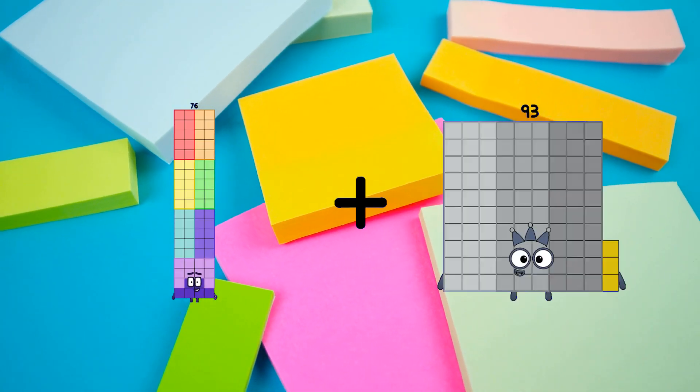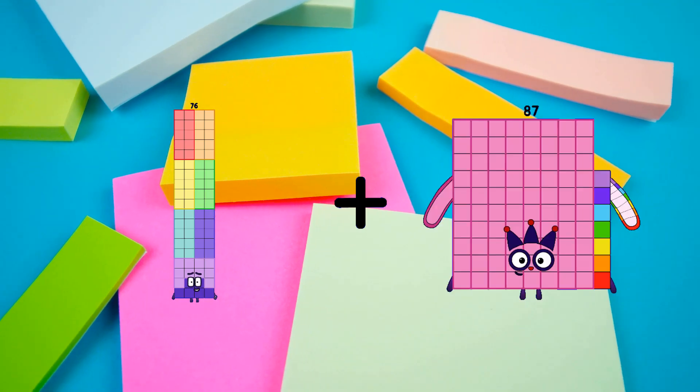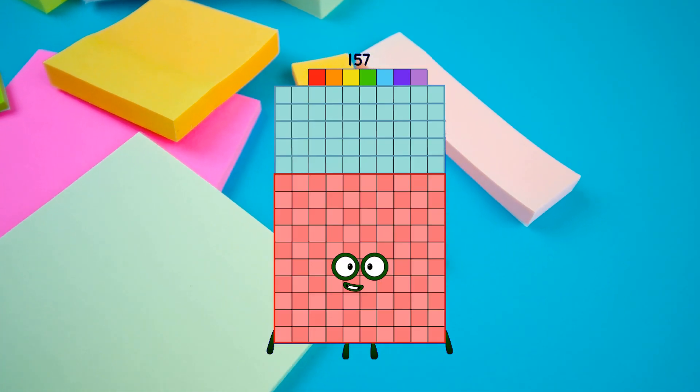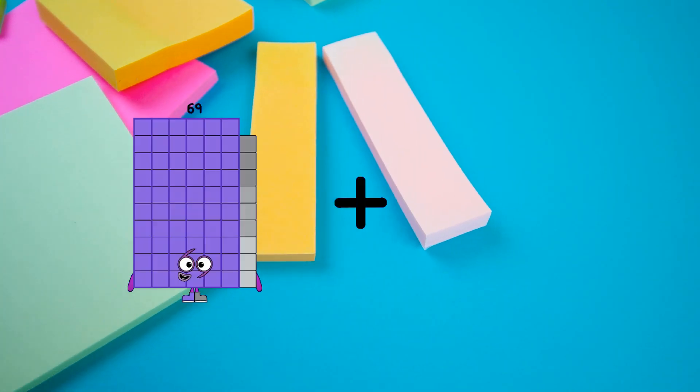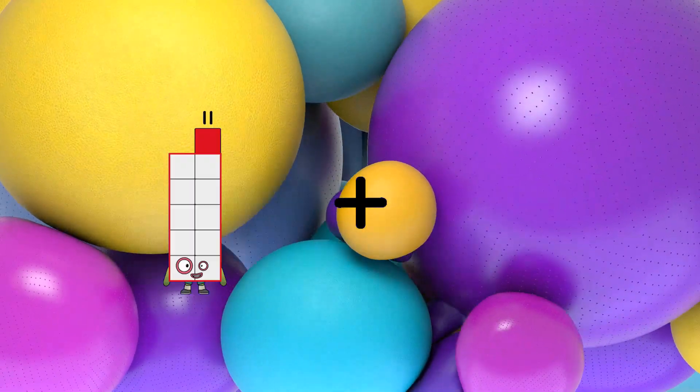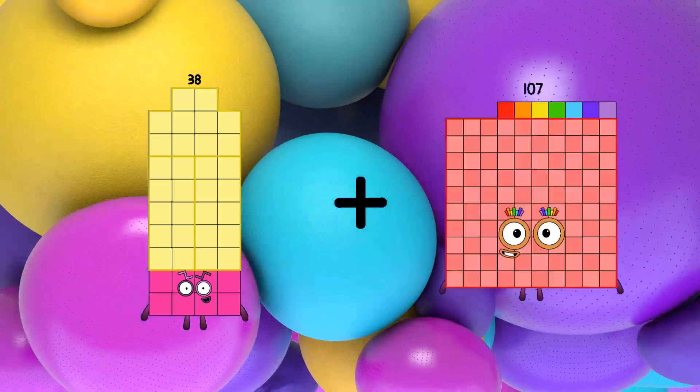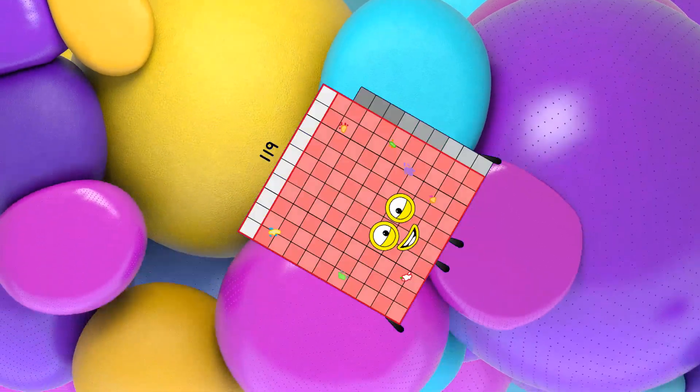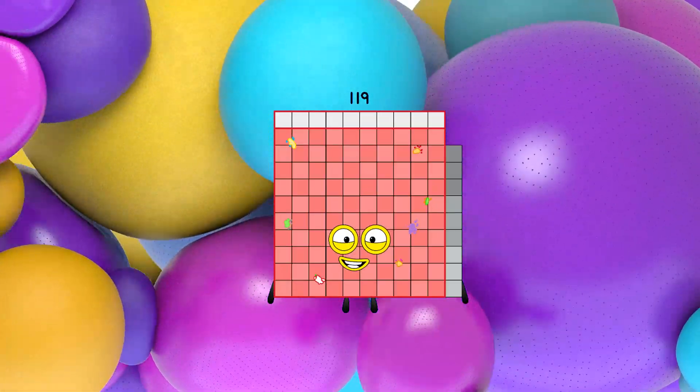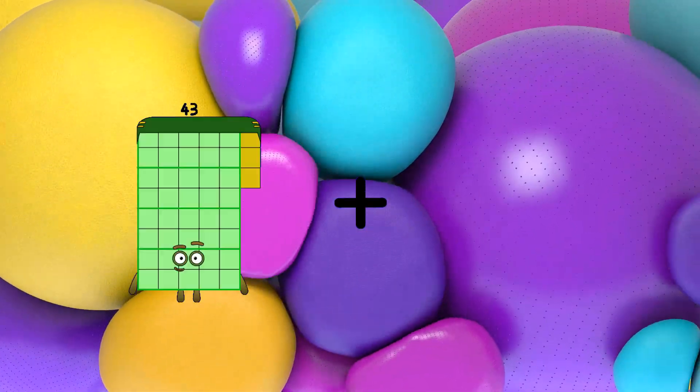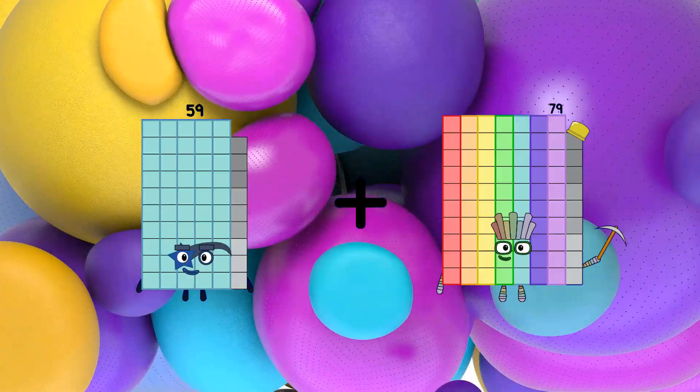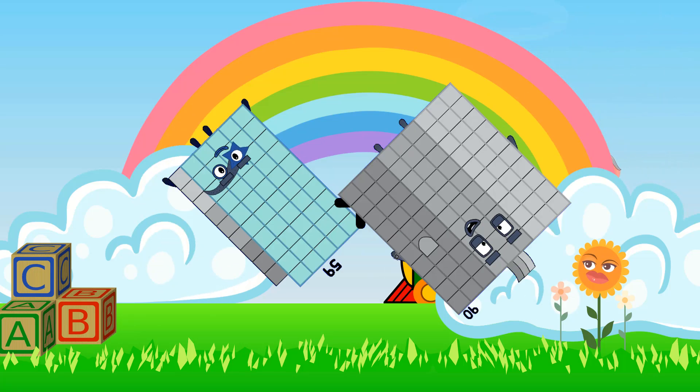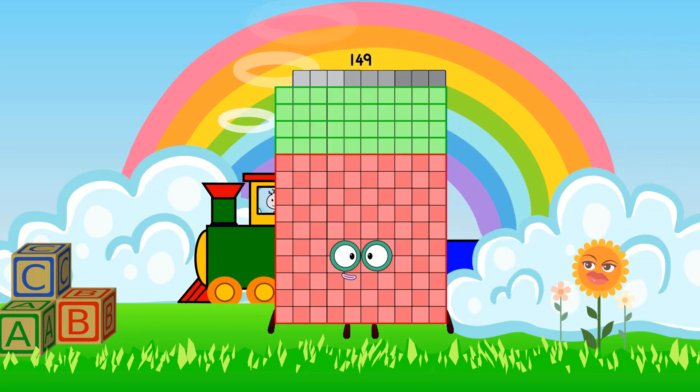76 plus 81 equals 157. 38 plus 81 equals 119. 59 plus 90 equals 149.